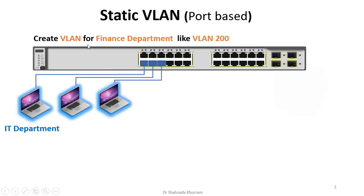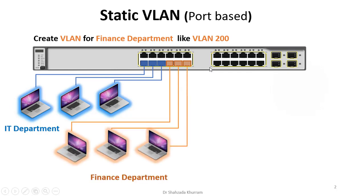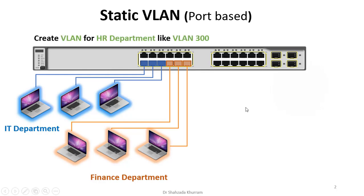Isi tarah doosri VLAN create kar lete hain Finance department ki, aur usko hum kehte hain VLAN 200. Phir usko ports assign kar lete hain switch ke andar, aur un ports ke saath us department ke PC connect kar dete hain.